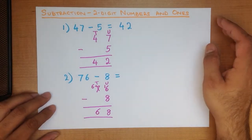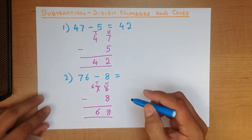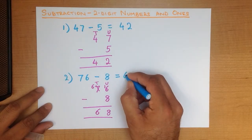And we have our answer. 76 minus 8 is 68.